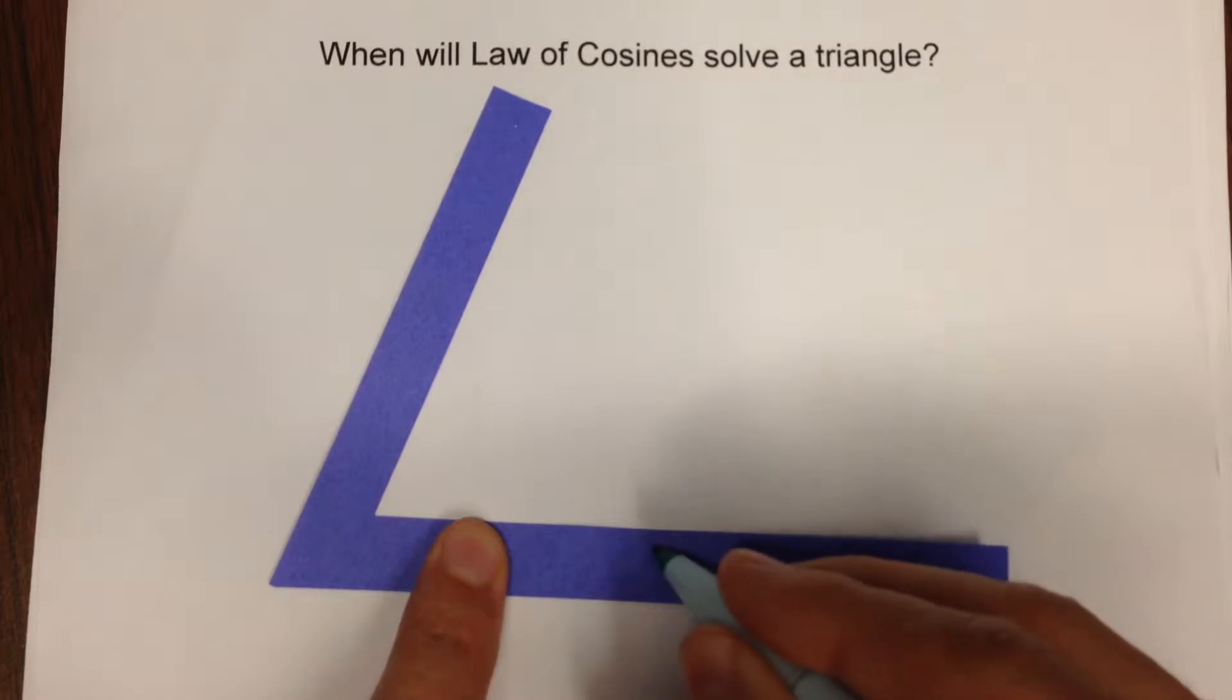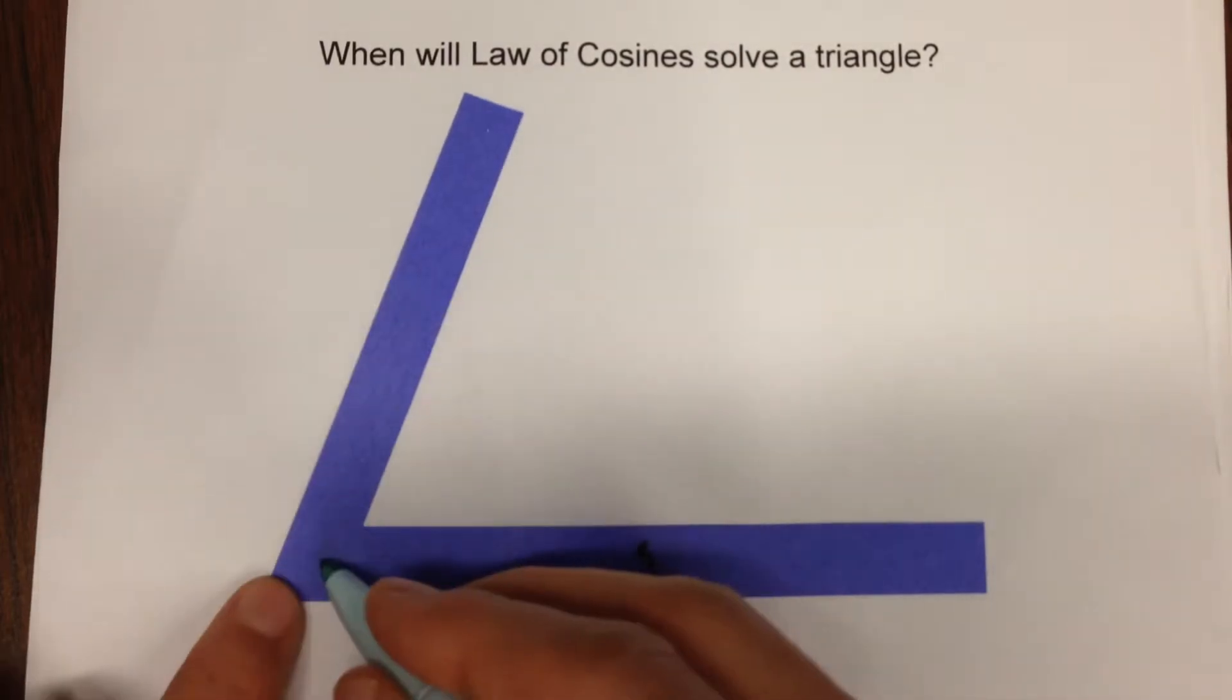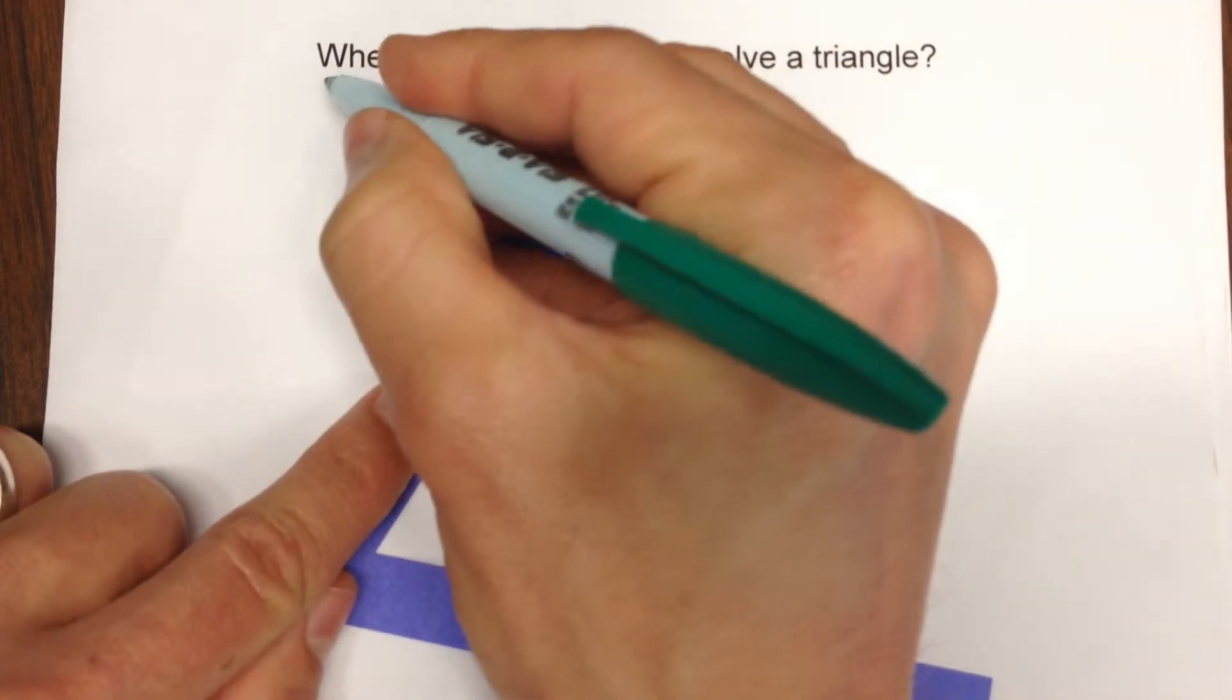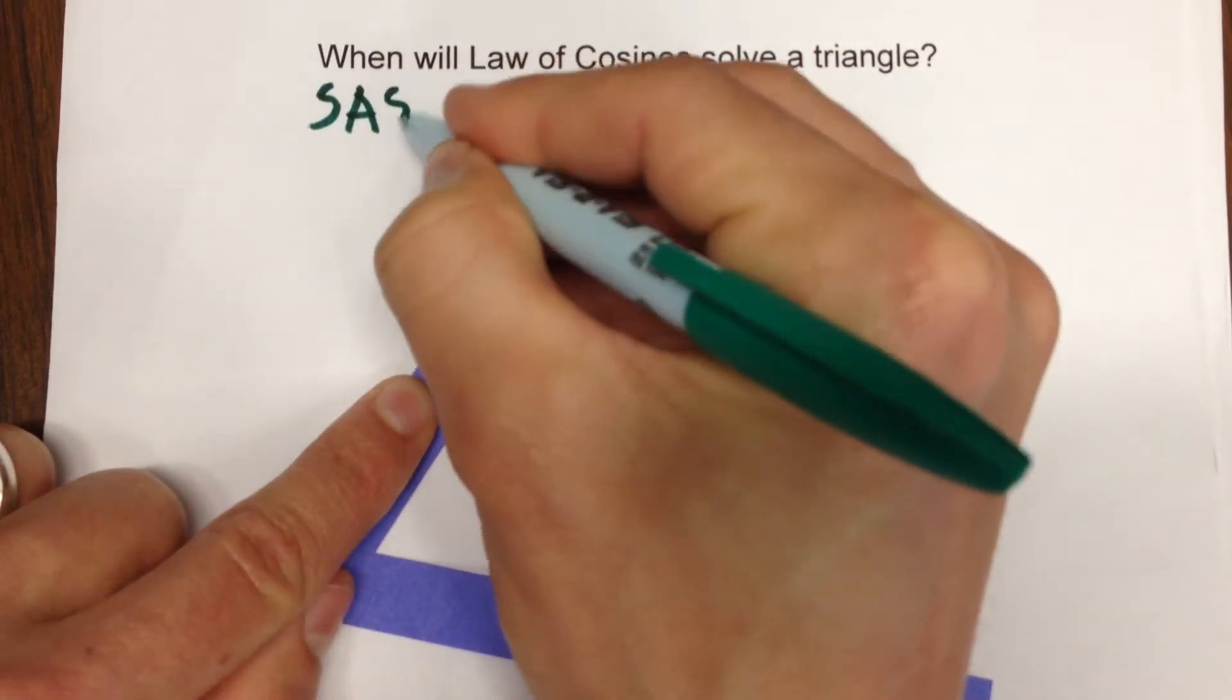The first is if you happen to have one side length fixed, the adjacent angle, and the adjacent side. We typically call that side angle side.